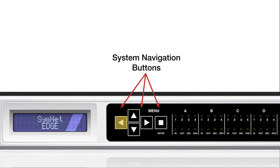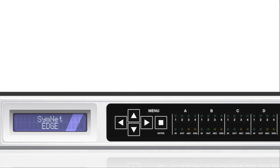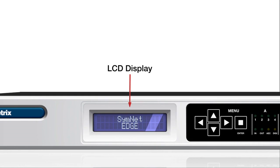The up, down, left, right, and enter buttons are used to navigate the system status and setup menus, as well as for user control in arc mode. The display is a 2-line by 16-character LCD that displays system status and arc menus.